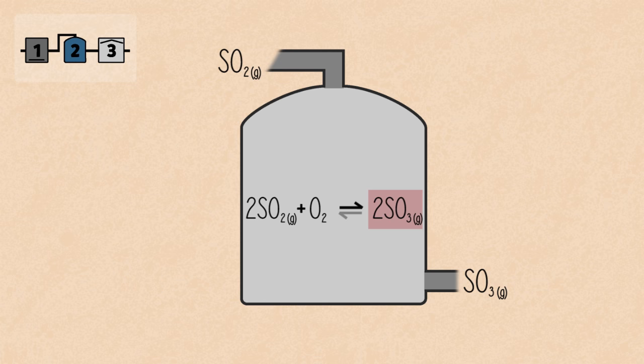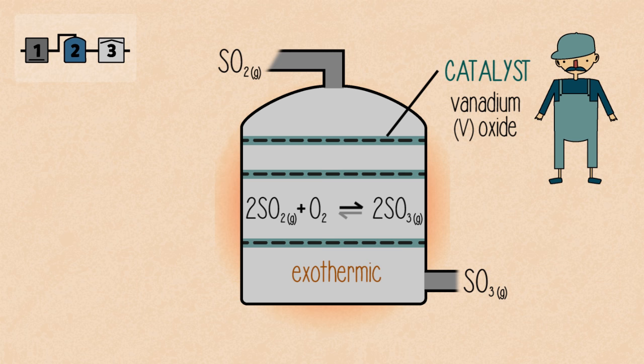This reaction can be sped up to form sulfur trioxide by adding a catalyst, vanadium oxide. This is an exothermic reaction, which means it gives out heat. Usually, this means that the formation of sulfur dioxide, the backward reaction, would be favored at higher temperatures. However,